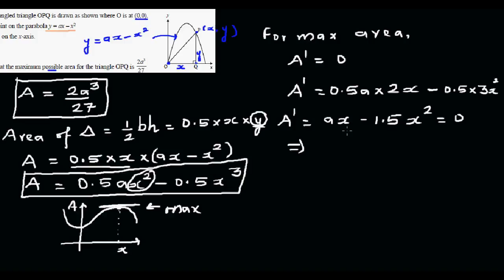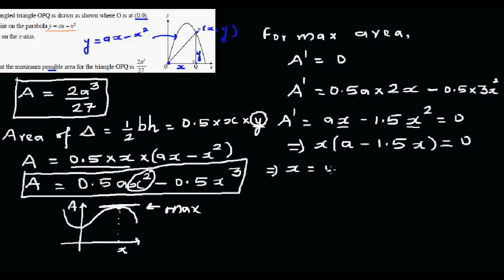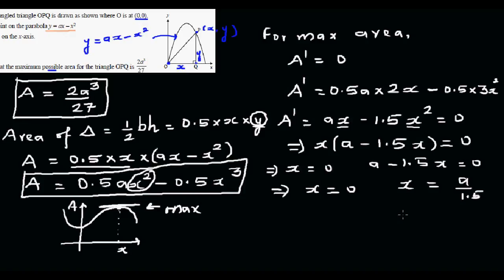Factoring out X from AX minus 1.5X squared equals zero gives X times (A minus 1.5X) equals zero. So X equals 0 or A minus 1.5X equals 0. Solving the second: X equals A divided by 1.5, which equals 2A over 3. So X equals 2A over 3 gives the maximum area.